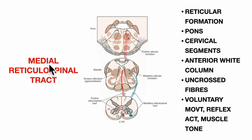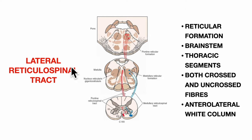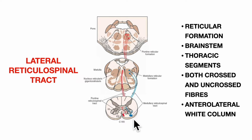The medial reticulospinal tract is formed by fibers from the reticular formation in the pons and descends to the cervical segments only. It lies in the anterior white column of the spinal cord and has uncrossed fibers. It influences voluntary movement, reflex activity, and muscle tone. The lateral reticulospinal tract originates from the reticular formation in the brain stem — midbrain, pons, and medulla oblongata — and descends up to the thoracic segments. It has both crossed and uncrossed fibers and lies in the anterolateral white column of the spinal cord.